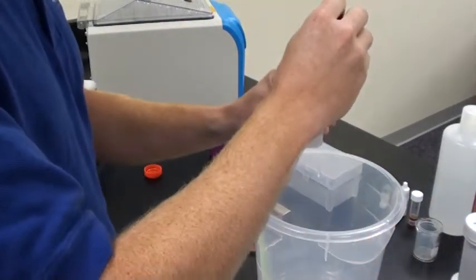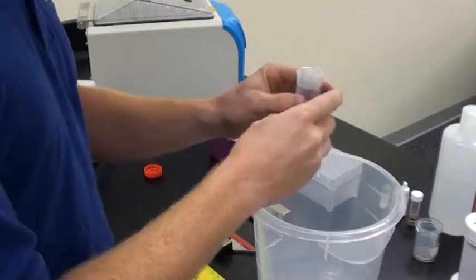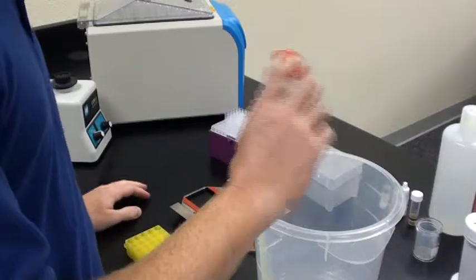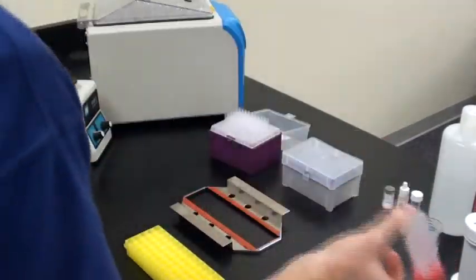To make sure that proteinase K is off the slide, we're going to put it back into our slide jar which is filled with PBS 7.4, and we're going to agitate or put it on a rocker for about 2 minutes.